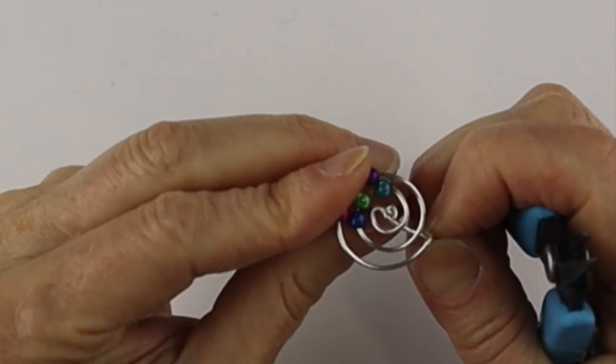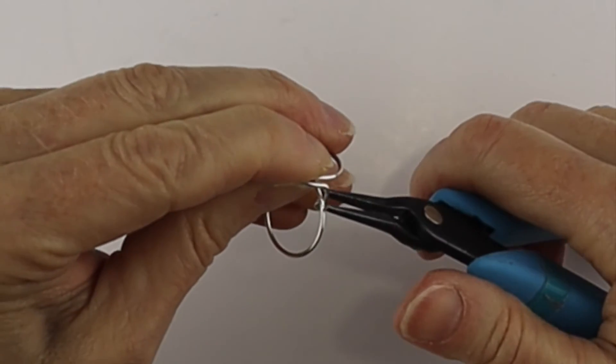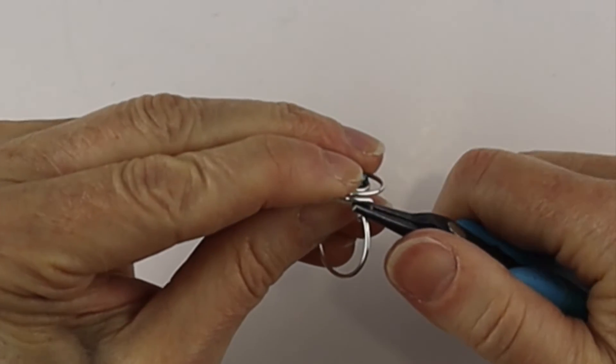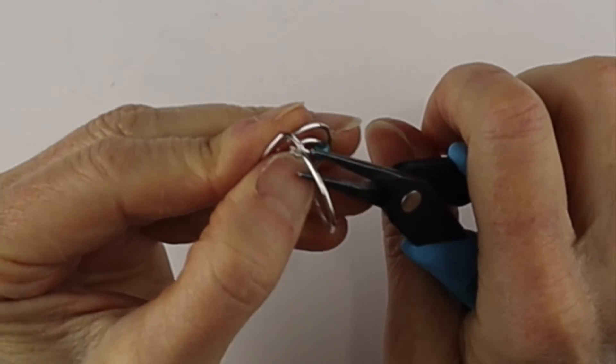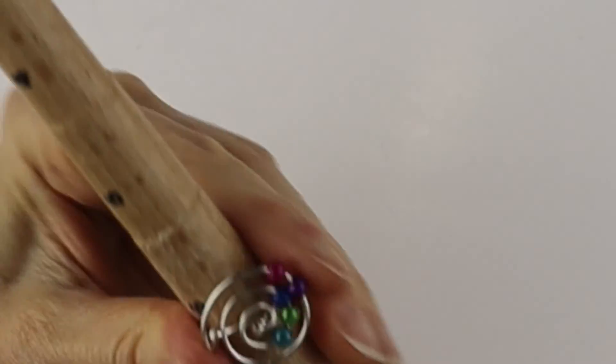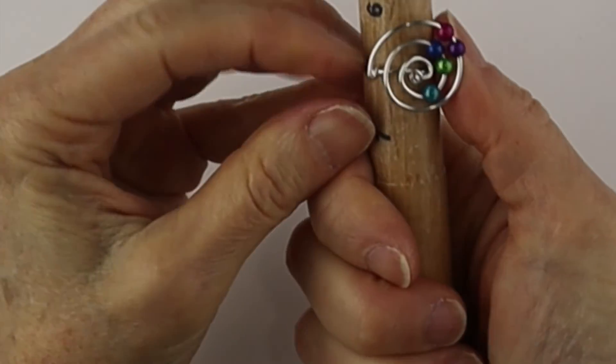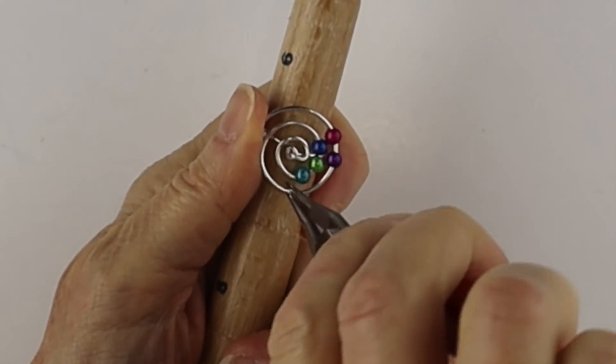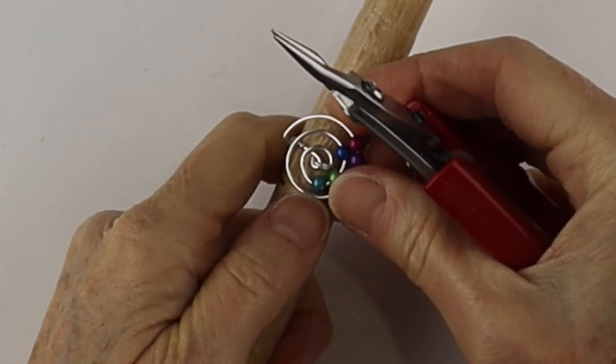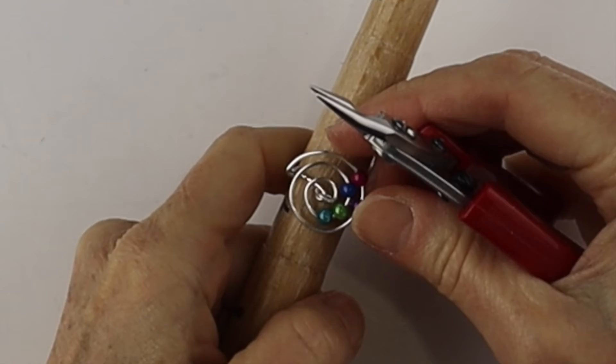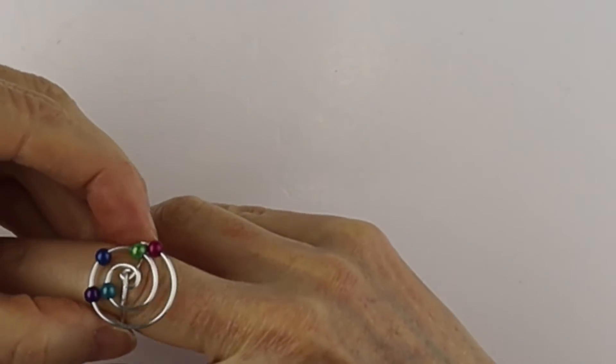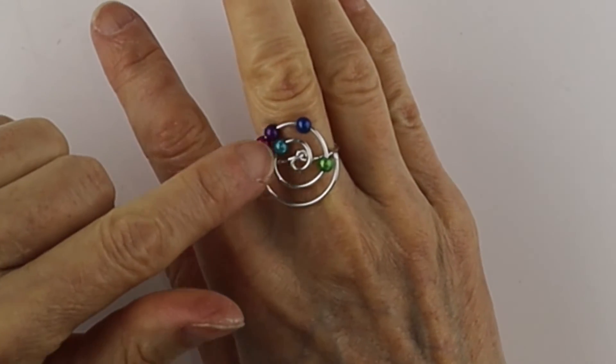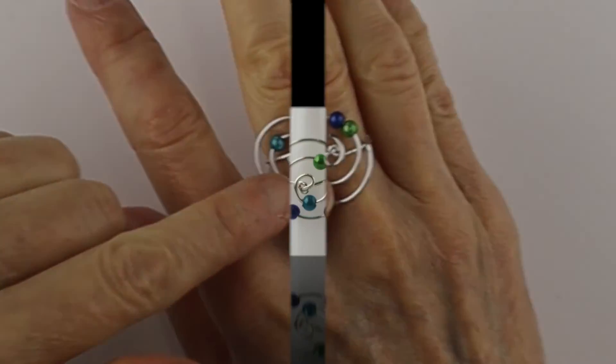And from there we're just going to check it. Make any little adjustments that you need. Just make sure that end is nice and securely in place. Put it back on the ring mandrel. Make sure the band is nice and curved. And just adjust it so the beads are able to run along the wires. And there you see the beads will move around for a really cool fidget ring.